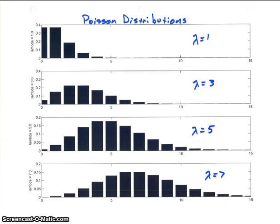All right, so I plotted some Poisson distributions here. I only went from 0 to 15 on all of these. Remember, we're dealing with a discrete random variable. 0 to 15, but I changed lambda for each of these.